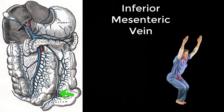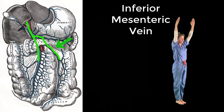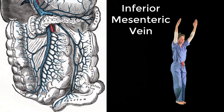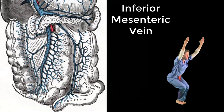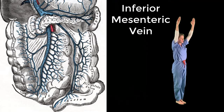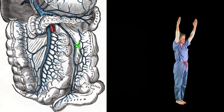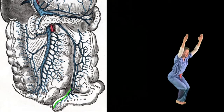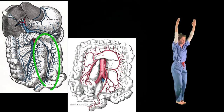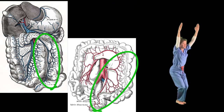The inferior mesenteric vein also drains into the splenic vein, forming the front leg of our chair. The inferior mesenteric vein drains the organs of the hindgut, which includes the descending colon, the sigmoid colon, the rectum, and the superior two-thirds of the anus, via the left colic veins, sigmoid veins, and the superior rectal vein. The inferior mesenteric vein and its tributaries match those of the inferior mesenteric artery and its branches.